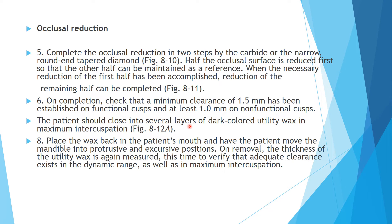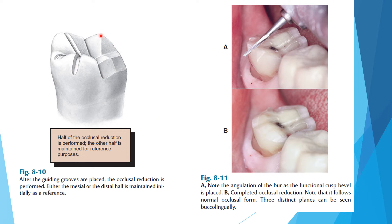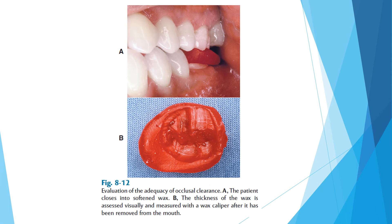The patient is told to close on a layer of utility wax in intercuspation. Place the wax back in the patient's mouth, have them bite, then measure the thickness. If the wax perforates, there is no clearance. Prepare one half and leave the other half as a reference, then join them. The anatomy of all cusps and grooves should be preserved — not flattened.